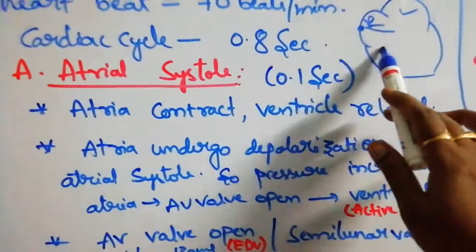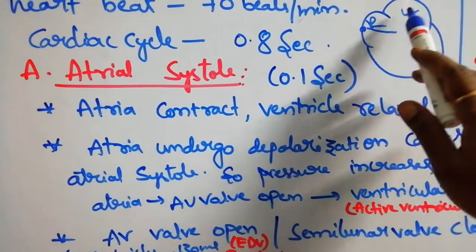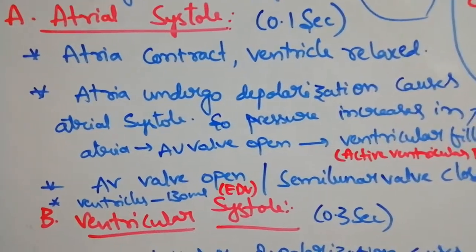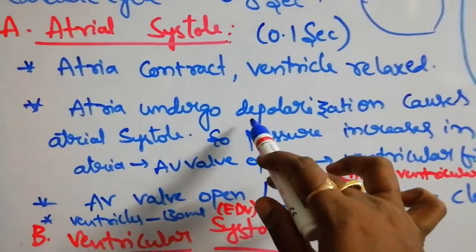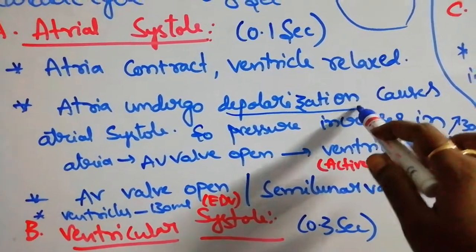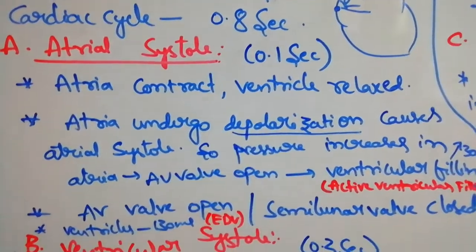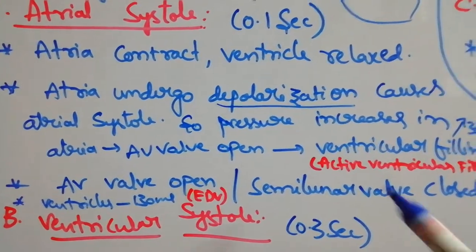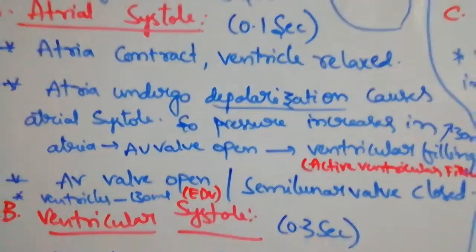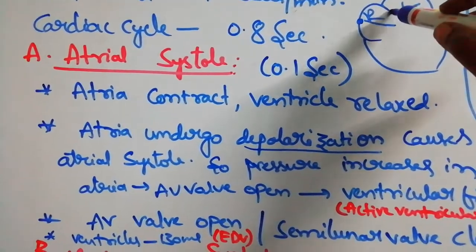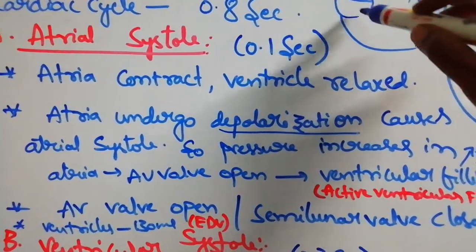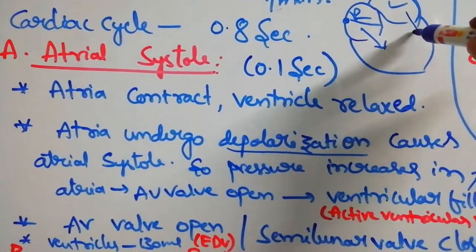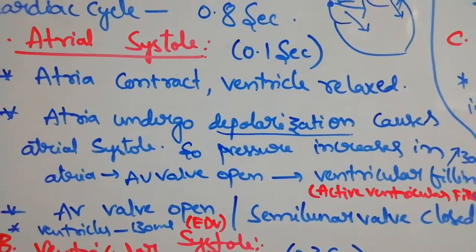The SA node produces impulses to contract the right and left atria. The atria undergo depolarization, meaning conduction of impulses. Conduction of impulses occurs from the SA node, causing atrial systole. When the atria contract, pressure increases in the atria, which opens the AV valves and blood flows from the atria to the ventricle.